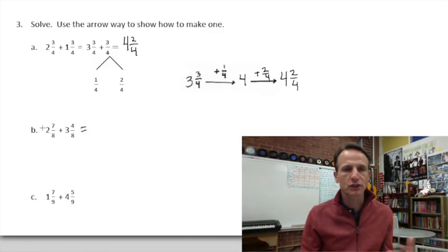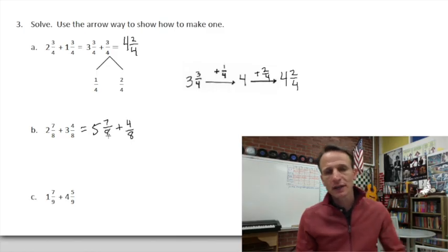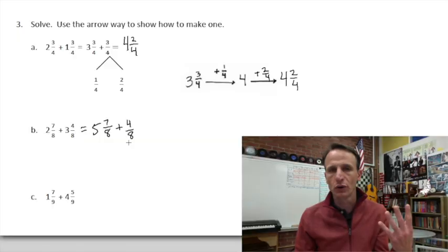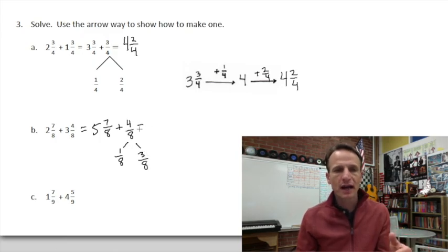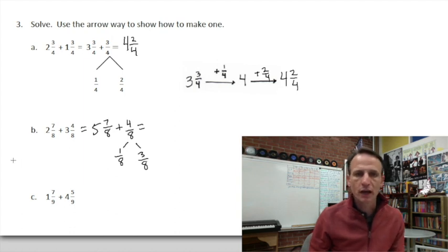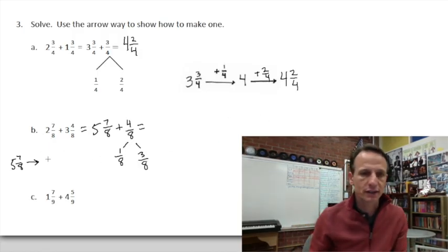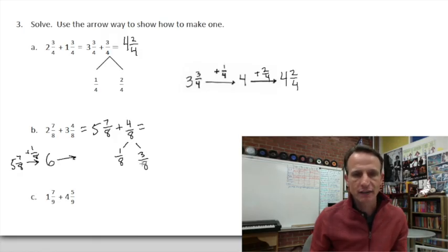Now this one: two and three make five, and then I have seven-eighths. I need to add the four-eighths. From seven-eighths, I need one more eighth to make a clean one whole. So from my four-eighths, that leaves three-eighths. Going to the arrow way: I've got five and seven-eighths, I add one-eighth — that takes me to a clean six — and then I have three-eighths. So my grand total is six and three-eighths.